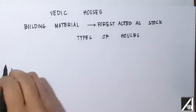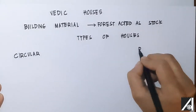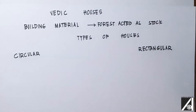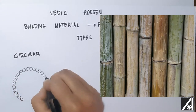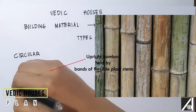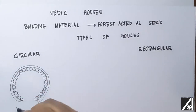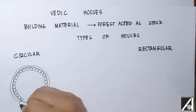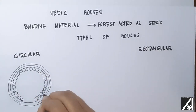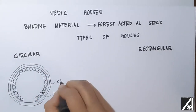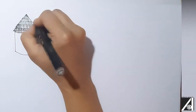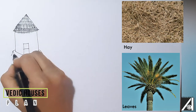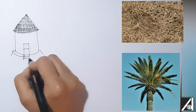The houses can be classified into two types on the basis of their plan forms: the circular houses and the rectangular houses. The circular house was the simplest kind of Vedic reed house — circular in form, attained by placing upright bamboos held together by bands of flexible plant stems, topped by a conical or domical framework in bamboo and covered with hay or leaves, then plastered with mud.